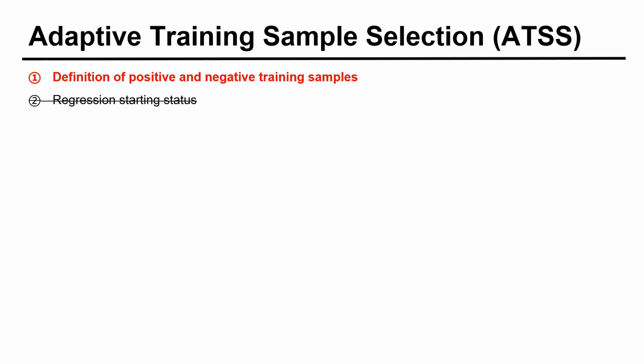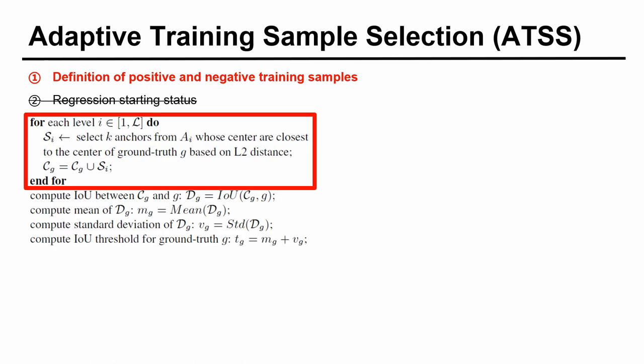Inspired by this, we delve into the most basic issue in object detection: how to define positive and negative training samples, and propose ATSS. For each object, we select its 9 candidate positive samples on each pyramid level, whose centers are closest to the center of this object.